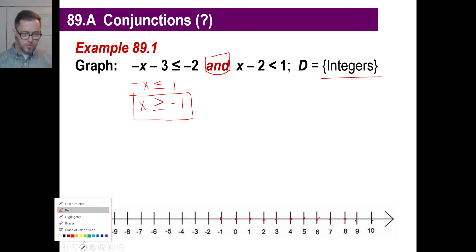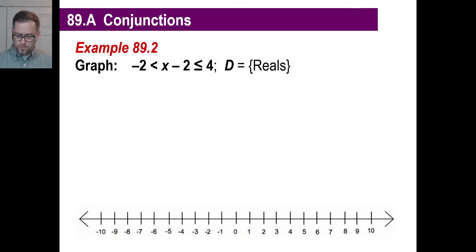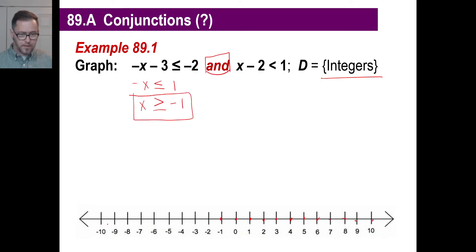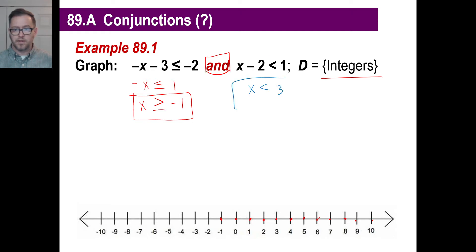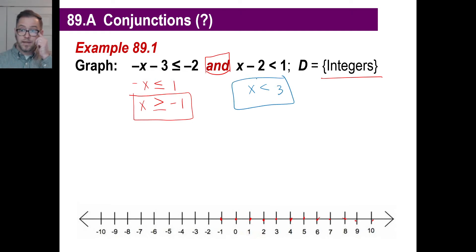Here is what the second one is going to look like. The second inequality is x minus 2 is less than 1. We know to move the 2 over, and that turns into positive 2, so x is less than 3. And again, we are allowed to use integers.